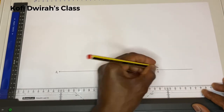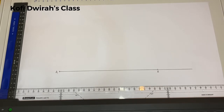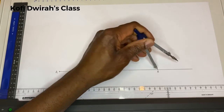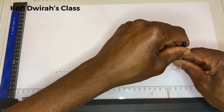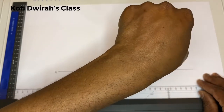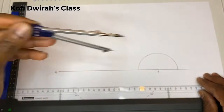Angle ABC is 45 degrees, so we are going to construct a 45 degree angle at point B. With your compass at point B, you draw an arc.